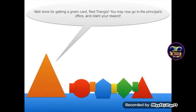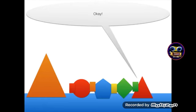I got a green card. Well done for getting a green card, Red Triangle. You may now go to the principal's office and claim your reward. Okay.